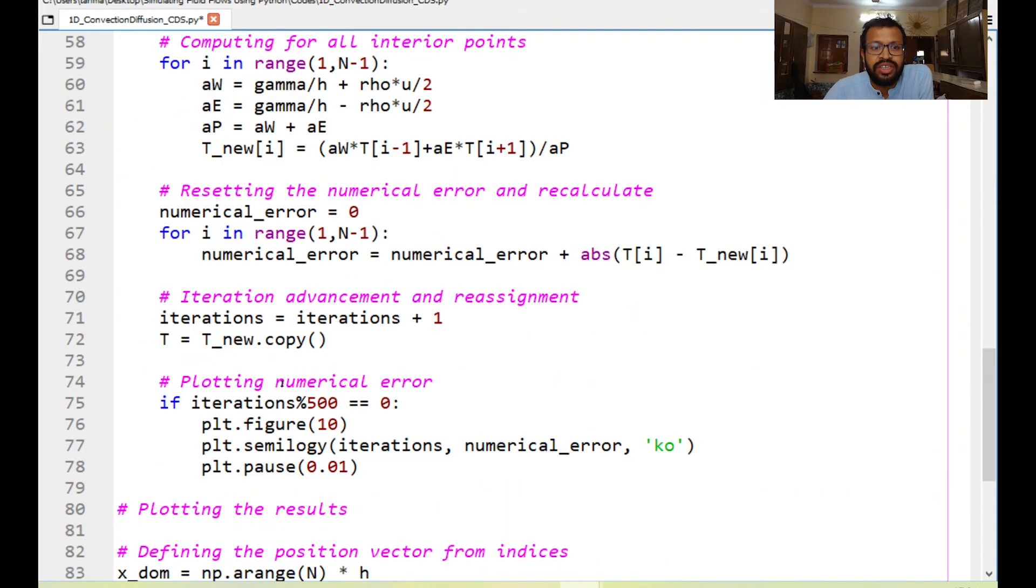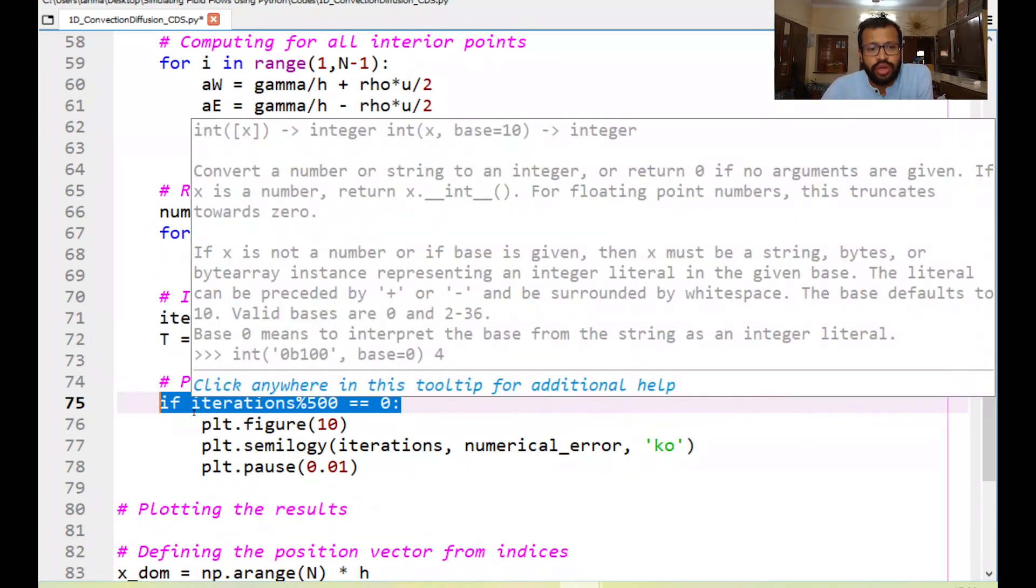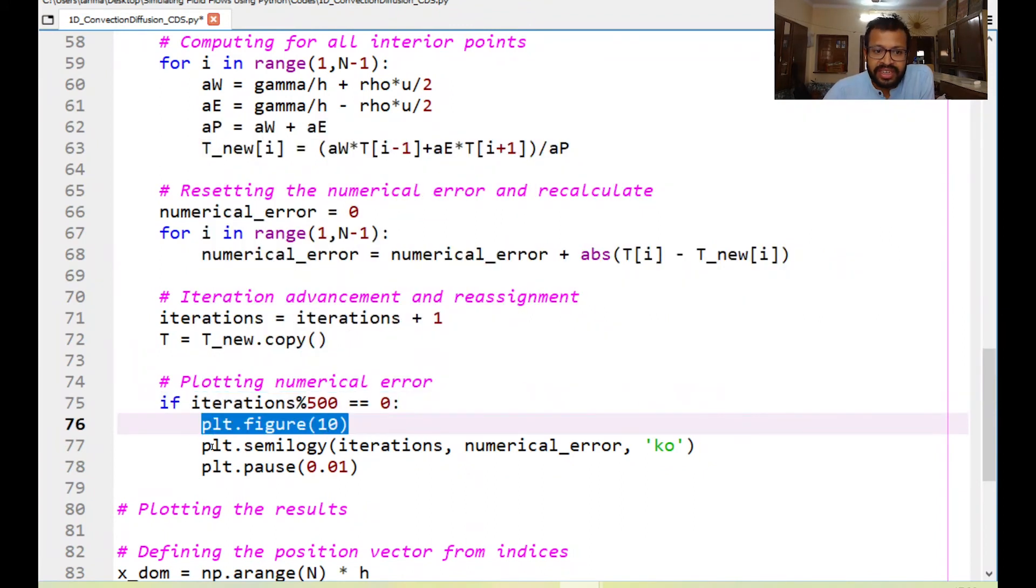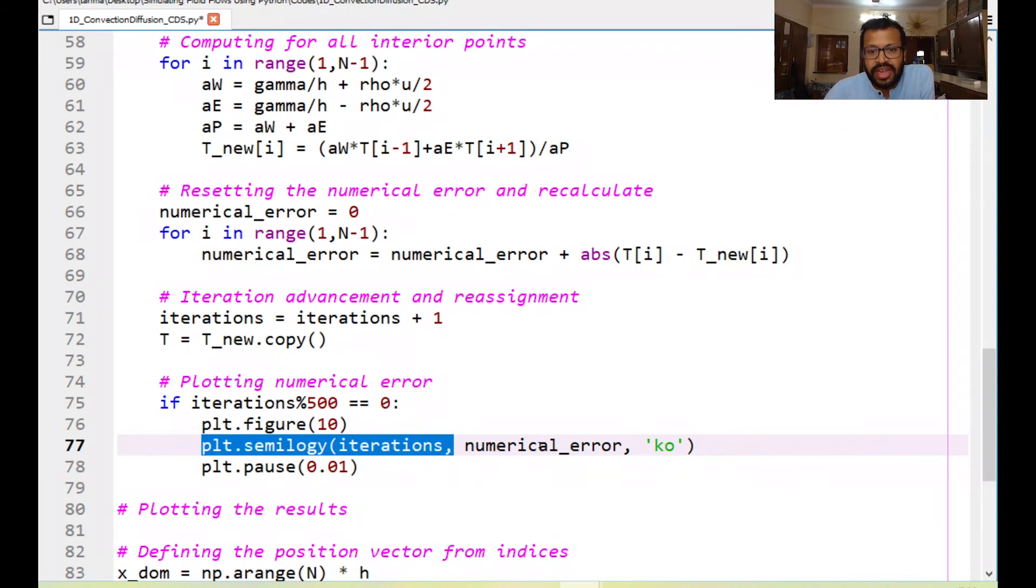We are using this figure 10 in order to plot the numerical error with iterations and we are saying that if the iteration is being divided by 500 and if the remainder is 0, so this particular sign indicates the remainder of this division of iterations by 500. So for example 500, 1000, 1500 this is true but if it's anything else this loop wouldn't be executed. So if this statement is correct then we recall the figure 10 and we plot the iterations and the numerical error.